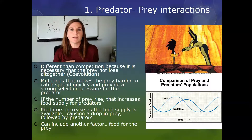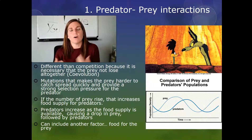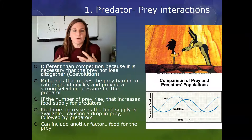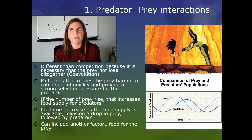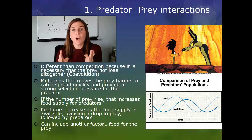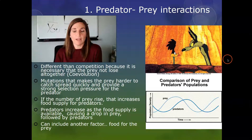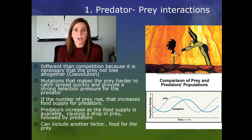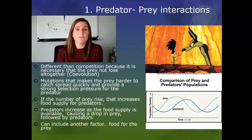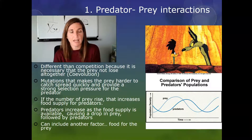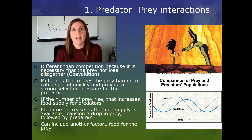Before we leave predation, I want to talk about the predator-prey relationship. It's different from competition because they don't necessarily both lose. The prey can't disappear entirely, or else the predator loses too. This drives co-evolution. Using the example of the roadrunner and Wile E. Coyote: the roadrunner gets faster, so the coyote has to get faster or more cunning; then the roadrunner gets more cunning, so the coyote has to come up with a better plan. They drive each other's evolution.